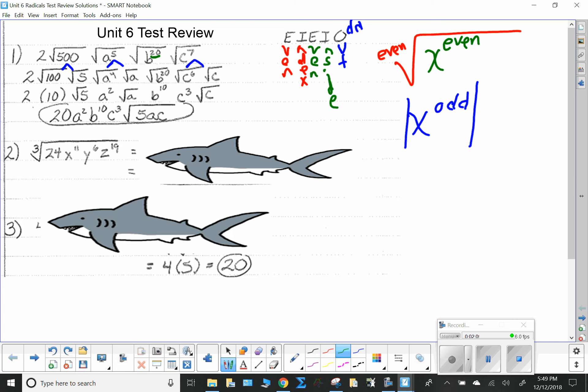Now, taking square roots, square root of 100 is 10. Square root of 5 stays under the radical. Square root of a to the fourth is a squared. Square root of a stays square root of a. Square root of b to the twentieth is b to the tenth. b to the tenth here is even, so it will not need absolute values.